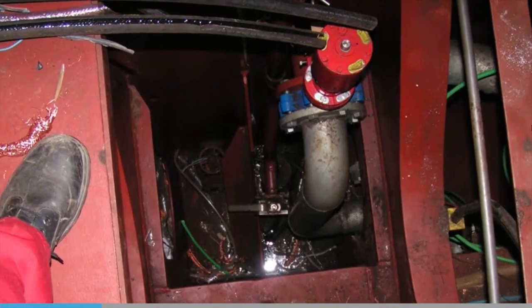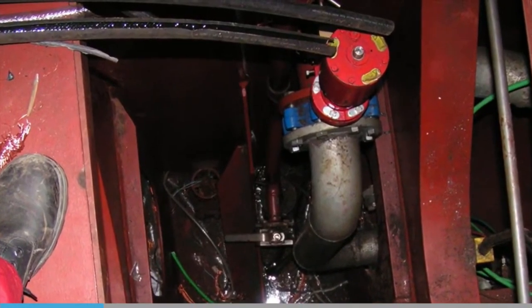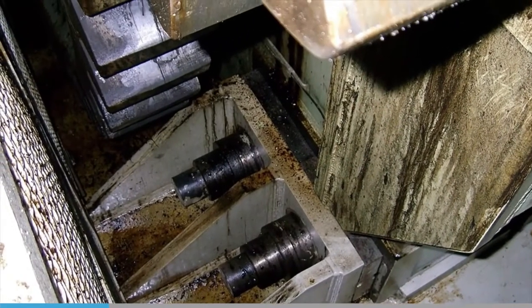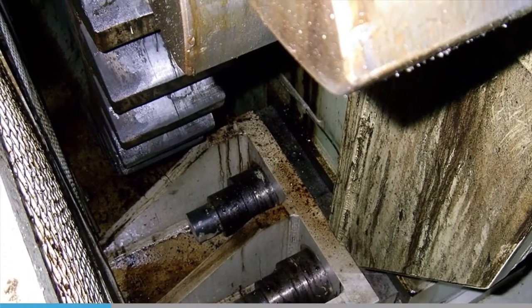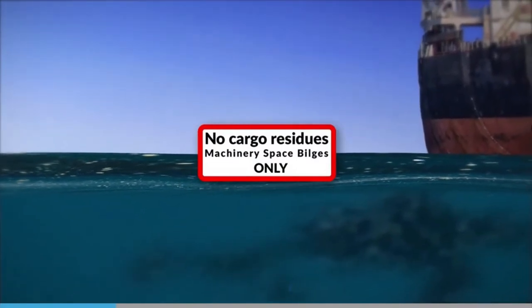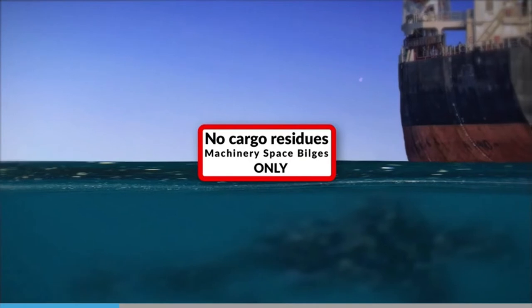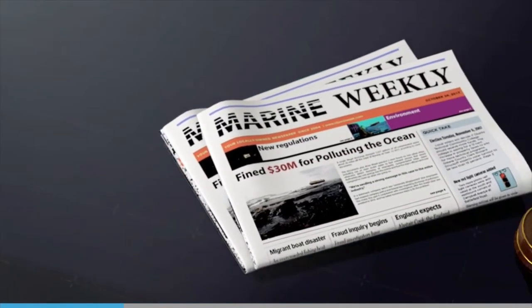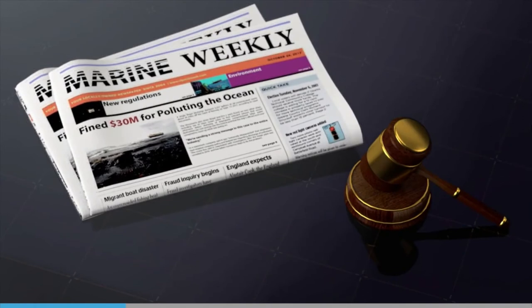First of all, we need to be clear that this module is about machinery space bilges, and that MARPOL regulations are written to try and avoid anyone cheating. So we must not knowingly put things like cargo washings or cargo pump room bilges into the engine room bilges and then say we are discharging engine room bilge water. That would be illegal.